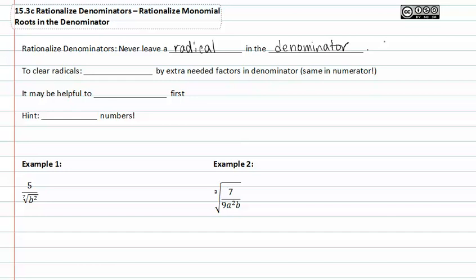So we're going to learn how to keep radicals from staying in the denominator. To clear radicals, you multiply by the extra needed factors in the denominator, and you do the same exact thing in the numerator. Whatever you multiply to the denominator you also need to multiply in the numerator. It may be helpful to simplify first.